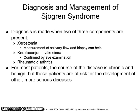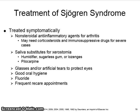For most patients the course of the disease is chronic and benign, but these patients are at risk for the development of other more serious diseases. Sjogren's syndrome is treated symptomatically with non-steroidal anti-inflammatory agents for arthritis. The patient may need corticosteroids and immunosuppressive drugs for severe cases.